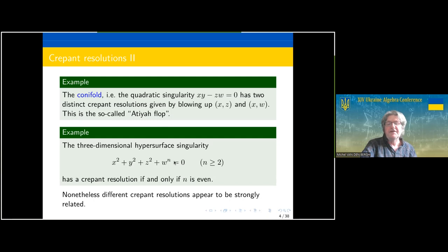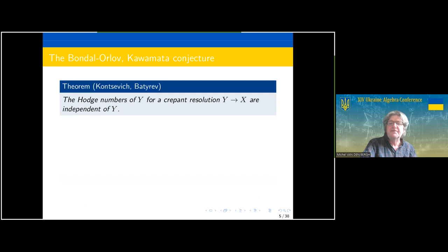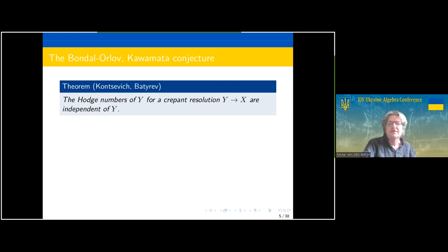Regarding existence: if we look at the hypersurface singularity given here, when n is two this is the conifold, and it has a crepant resolution if and only if n is even. Crepant resolutions are not unique, but they appear to be very strongly related. For example, it's a classical result that if we have two crepant resolutions then they have the same Hodge numbers. Actually, there is a formula giving the so-called stringy Hodge numbers, which also works if a crepant resolution does not exist — in which case they are not integers in general.